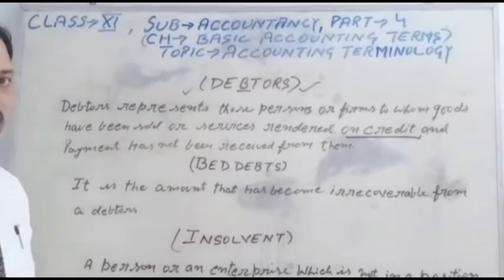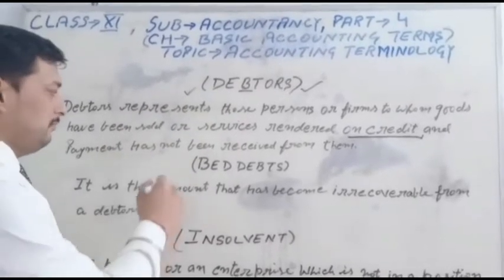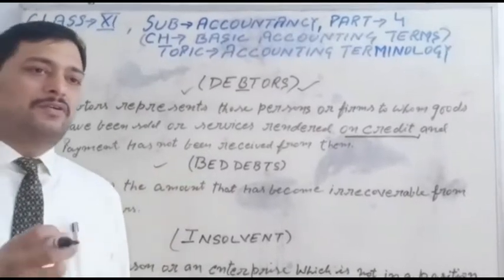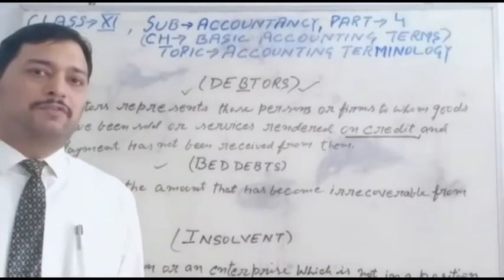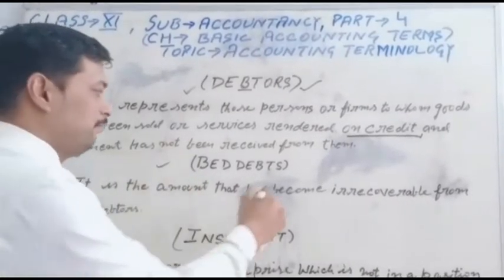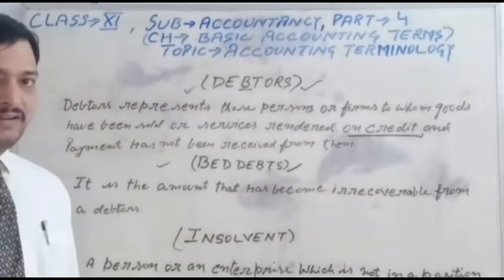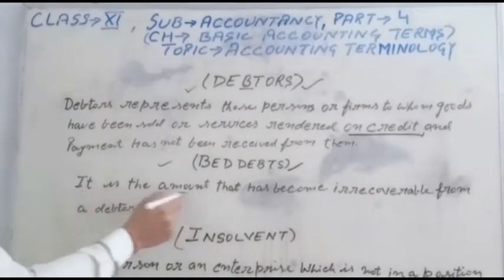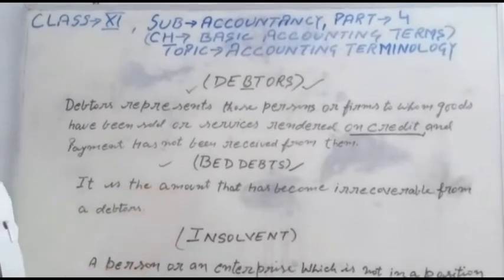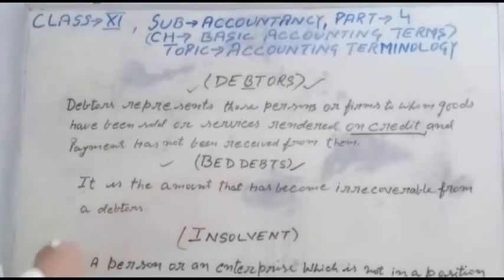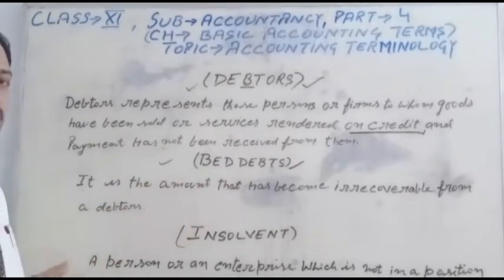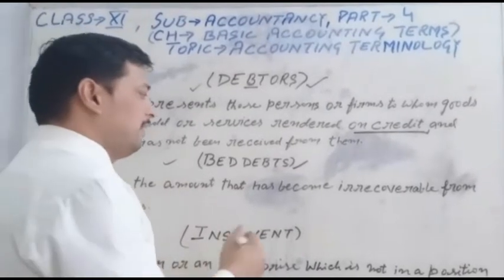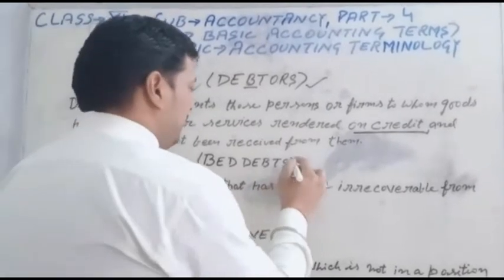It is called a debt. If the amount is not to be received from the debtors, it is called bad debts. So it is the amount that has been irrecoverable from a debtor — those amounts that are irrecoverable from the debtors are called bad debts.